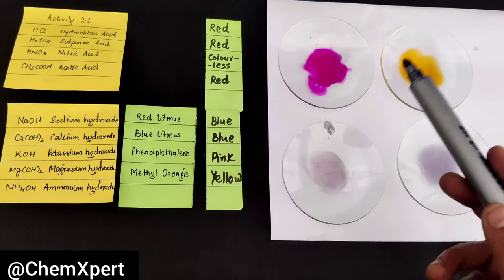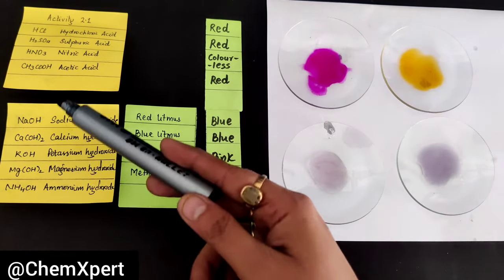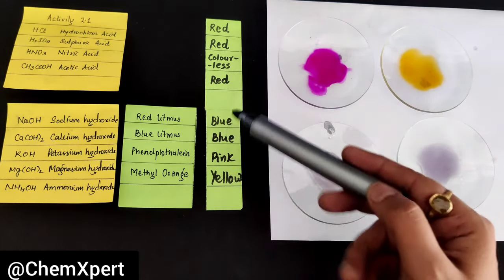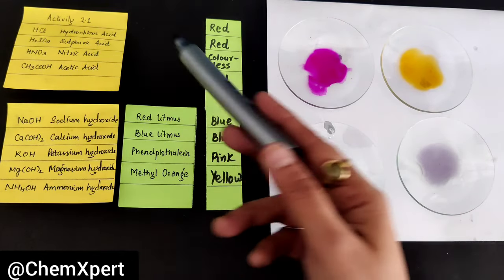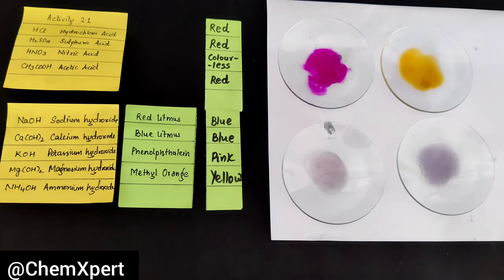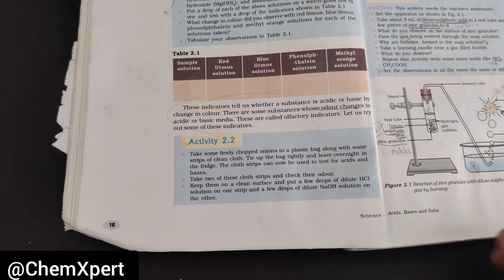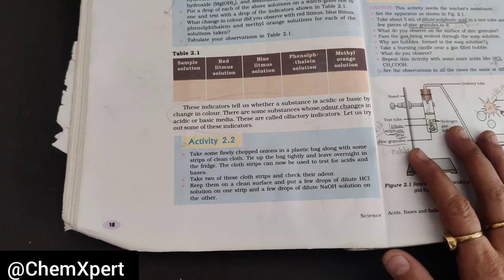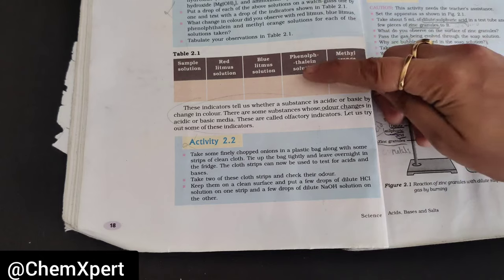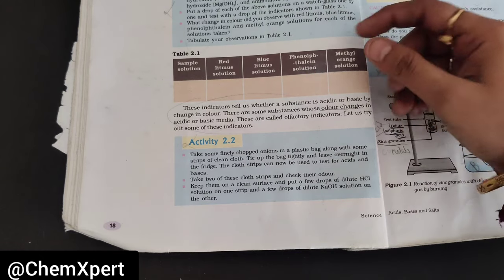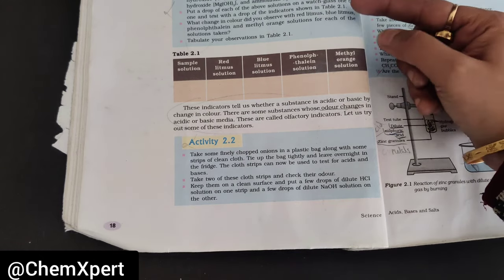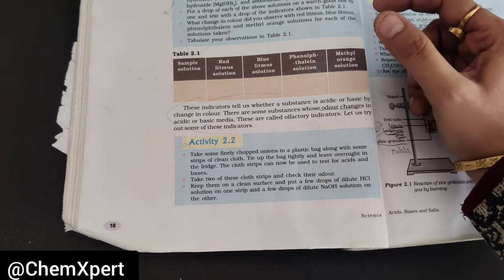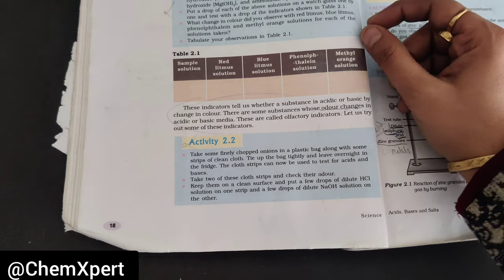I used NaOH here; if I take any other base sample, the result will remain the same. So by this we conclude Activity 2.1. Now the next activity is Activity 2.2, based on olfactory indicators. Activity 2.1 was based on color change of indicators in acid and base — visible indicators.